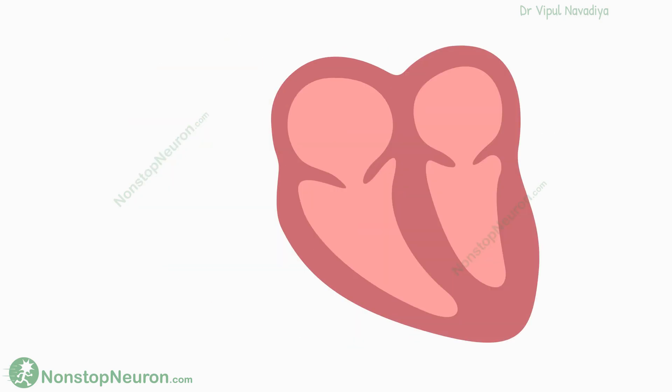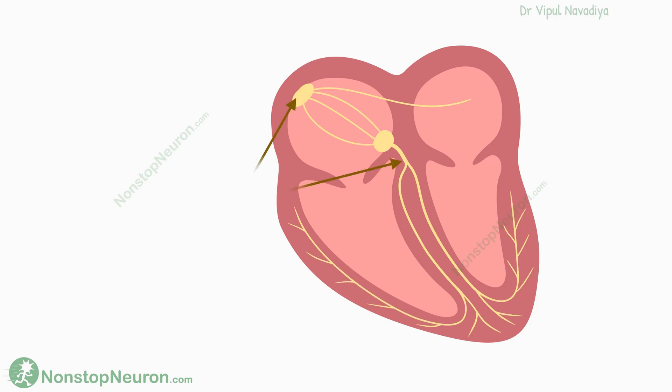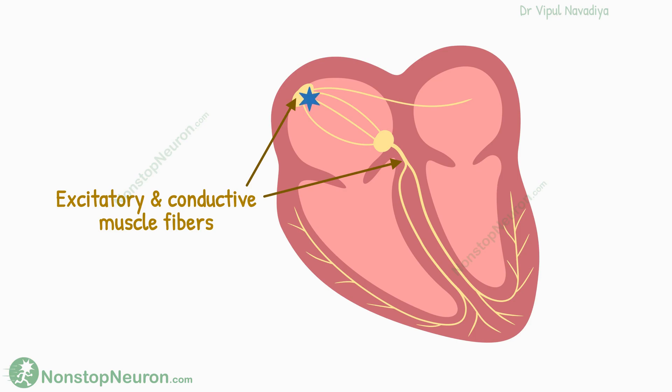Speaking of impulse conduction, the third type of cardiac muscle is specialized excitatory and conductive muscle fibers. They generate impulses or transmit them, playing an important role in maintaining heart rhythm. They contain few contractile proteins, so they have limited contractility compared to the main atrial and ventricular muscles.